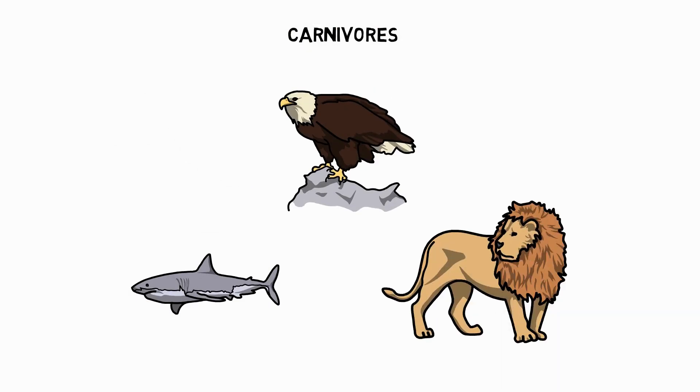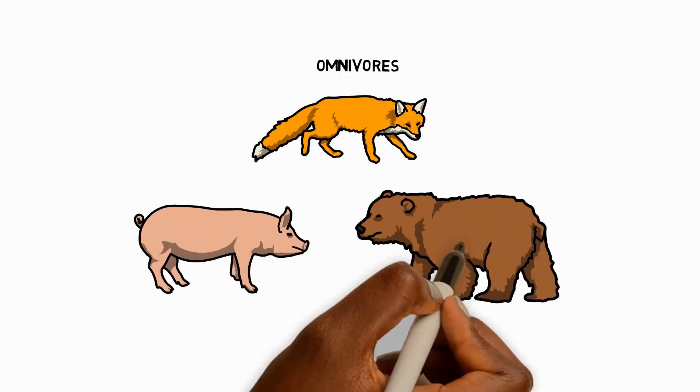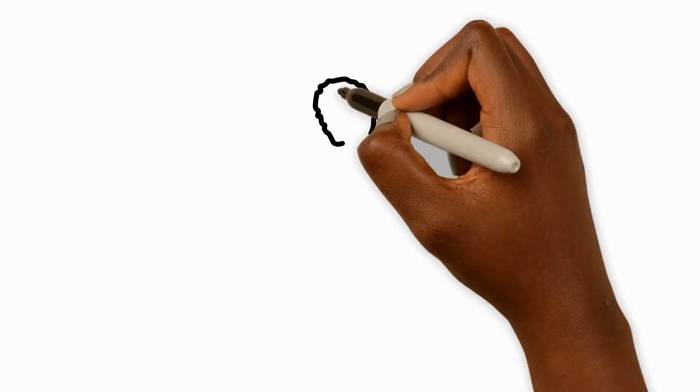There's also a group of animals who eat both plants and animals. These are called omnivores, and foxes, pigs, and most bears belong to this group. Humans also belong to this group. Eating a wider range of foods increases chances of survival.